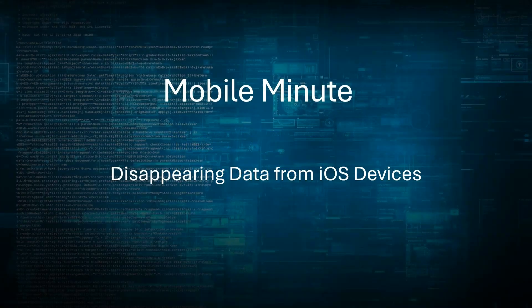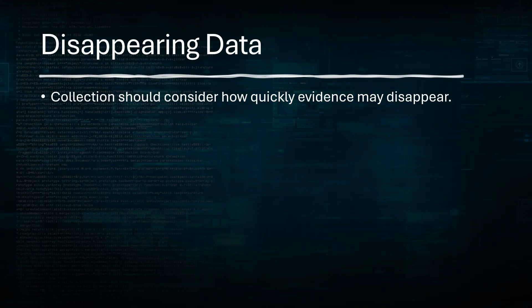Thank you for joining this episode of Mobile Minute. In this episode we're going to talk about disappearing data from iOS devices — the how, when, and why some of that data will disappear. Apple's iOS has a built-in timeline that purges data that's no longer in use. While this is handy for the average iPhone user, it can have considerable impact on iOS forensic investigations. Without timely mobile forensic extraction, key evidence can be lost, potentially impacting your investigation and losing valuable iOS evidence sources that can hamper your ability to identify actual intelligence.